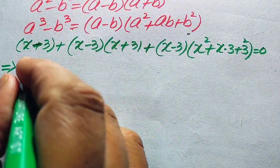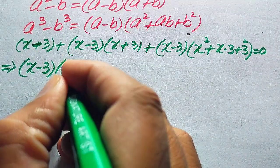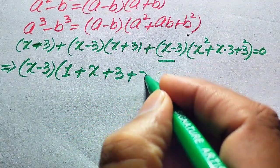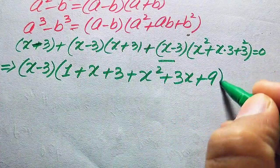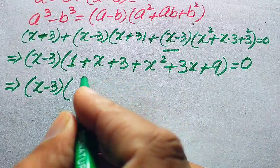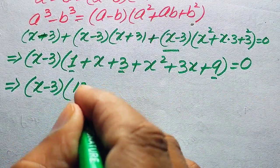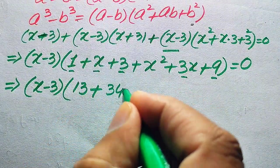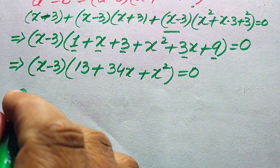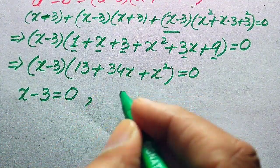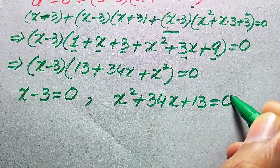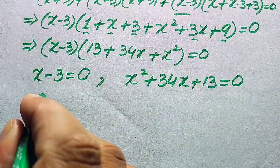Each term contains the factor (x minus 3), so we factor it out. Taking (x minus 3) common gives: (x minus 3) times (1 plus (x plus 3) plus (x squared plus 3x plus 9)) equals zero. Simplifying inside: 1 plus 3 plus 9 equals 13, and x plus 3x equals 4x, so we get: (x minus 3)(x squared plus 4x plus 13) equals zero.